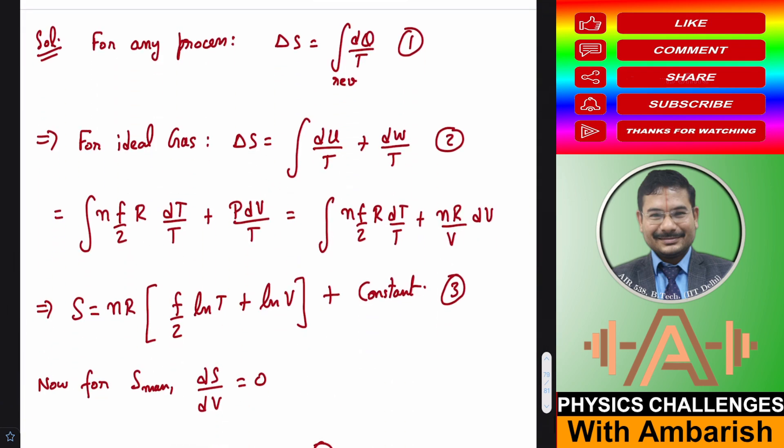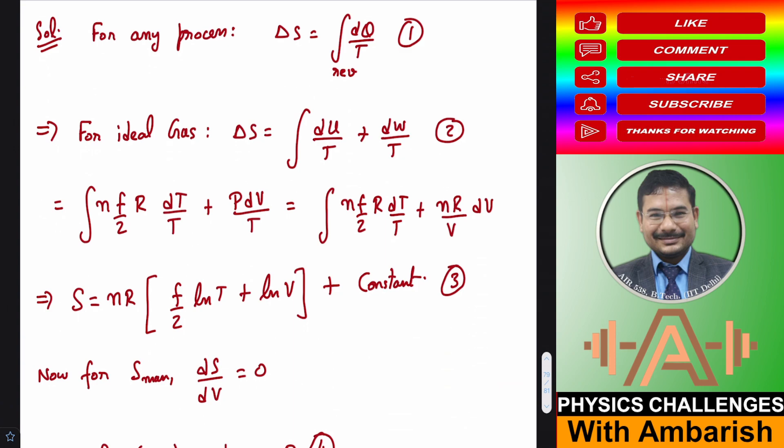So first of all, what is the definition of entropy? You might have studied in your chemistry lectures also. For any process, entropy is given by integration of dQ by T reversible. So this is the change in entropy. Absolute entropy does not matter, very often we are interested only in change in entropy which is absolute and base entropy you can assume anywhere to be zero. So this is your ΔS = ∫dQ/T reversible.